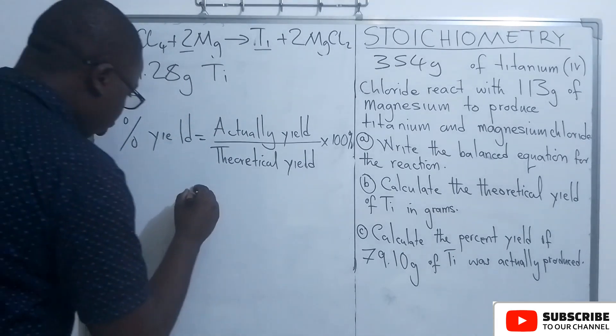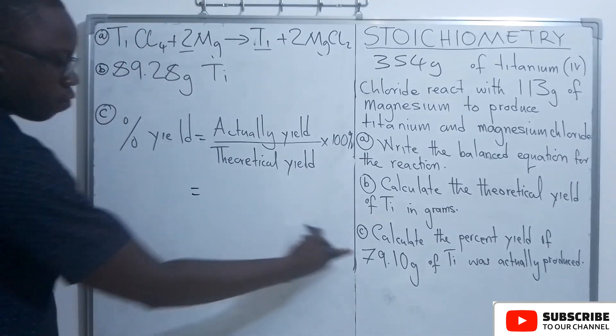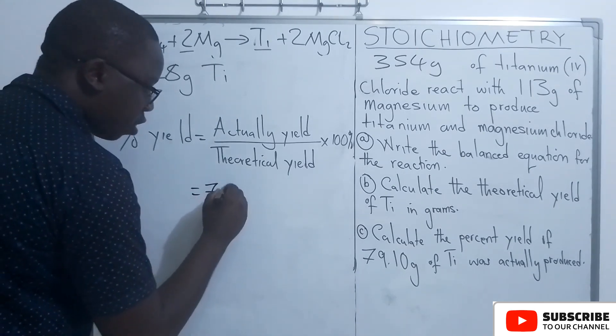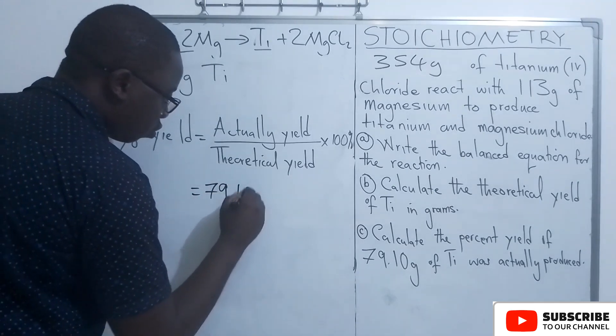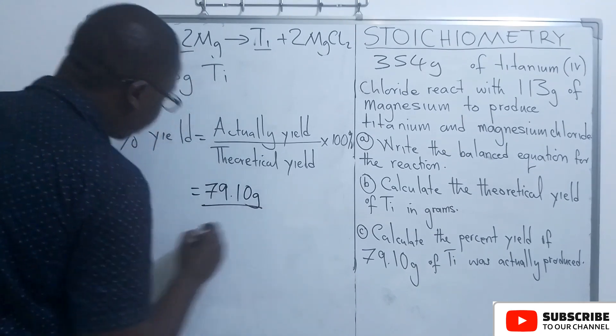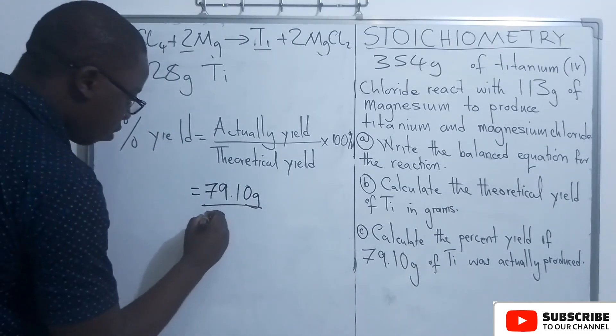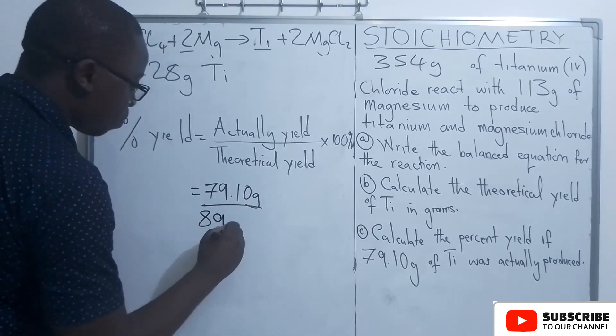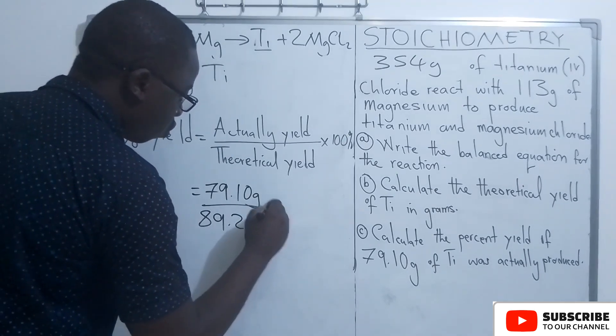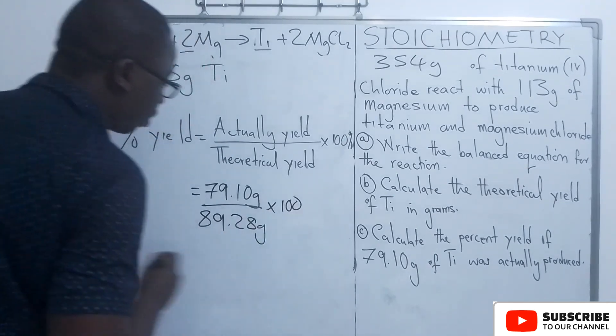The actual yield then we have is 79.10 grams. Then the theoretical yield, we have found it is 89.28 grams. We are multiplying this by 100.